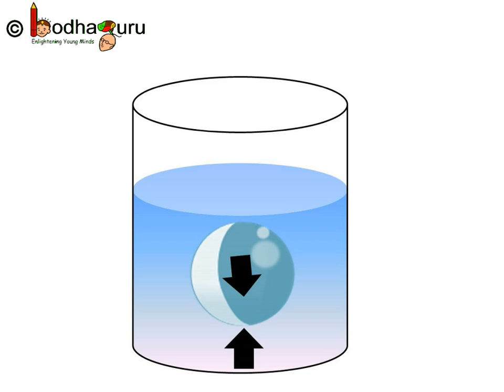This means both the forces have balanced out each other. In this case, we can say the buoyant force is equal to the gravitational force, and so the body — the ball — neither sinks nor floats.